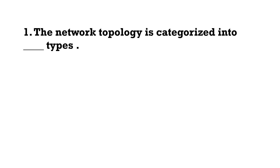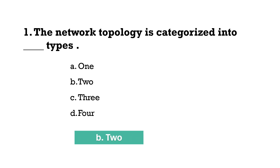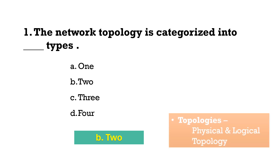First question: Network topology is categorized into how many types? The correct answer is two. The two types of topologies are physical topology and logical topology.